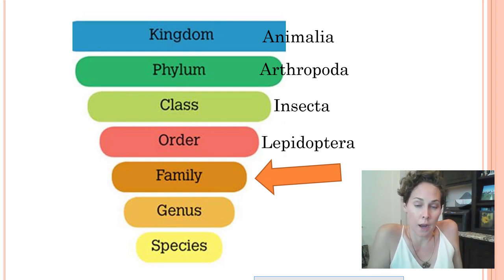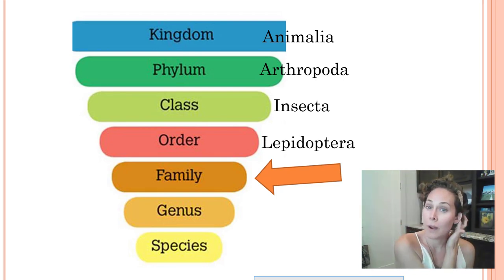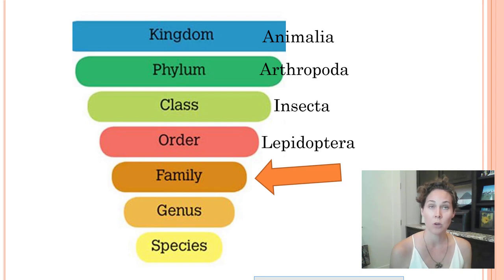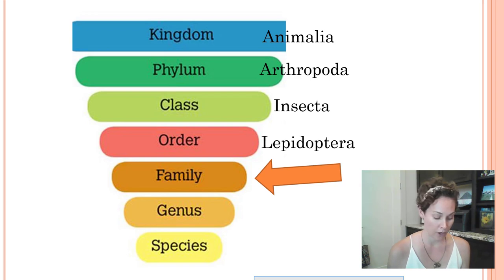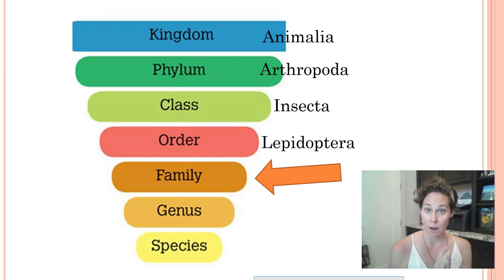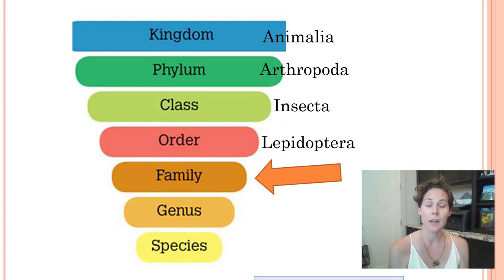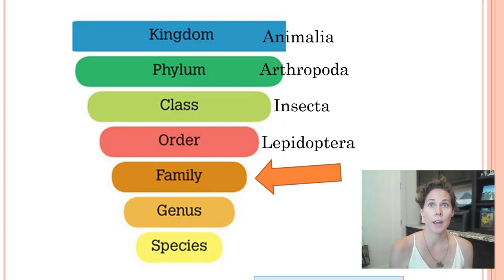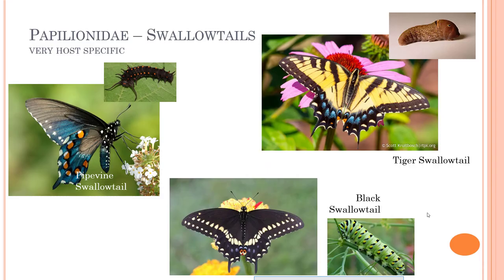To give you a recap of biology: we're going to be looking at specific families of butterflies and what host plants they're attracted to. Insects are in Kingdom Animalia, Phylum Arthropoda, Class Insecta. Lepidoptera is just your butterflies, moths, and skippers. Now we're going to look more at family, which begins to get more and more specific. Because it's just above genus and species, many things within one family might have the same host plant, so we can be a little more broad.